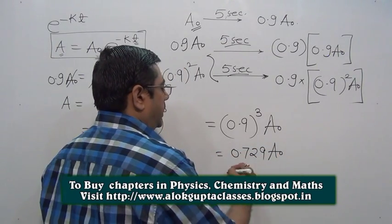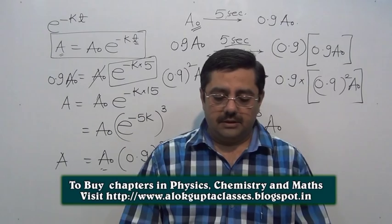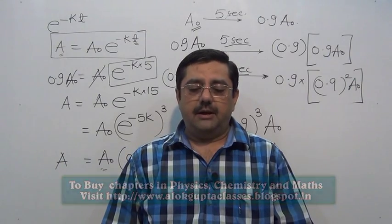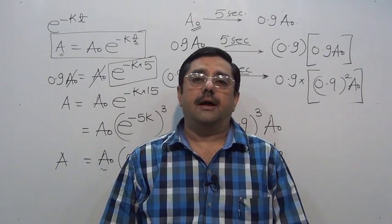After solving, it is coming as 0.729. The cube of 0.9 is 0.729. This question appeared in JEE Main 2013.